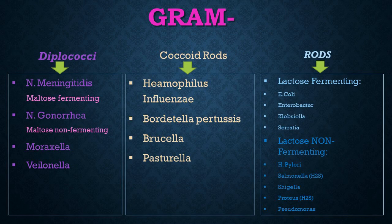Here are the gram-negative organisms, divided into diplococci, coccoid rods, and rods. The diplococci are Neisseria meningitidis, Neisseria gonorrhea, Moraxella, and Veillonella. The coccoid rods are Haemophilus influenzae, Bordetella pertussis, Brucella, and Pasteurella. The gram-negative rods include the lactose-fermenting ones — E. coli, Enterobacter, Klebsiella, and Serratia — and the lactose non-fermenting ones — H. pylori, Salmonella, Shigella, Proteus, and Pseudomonas.